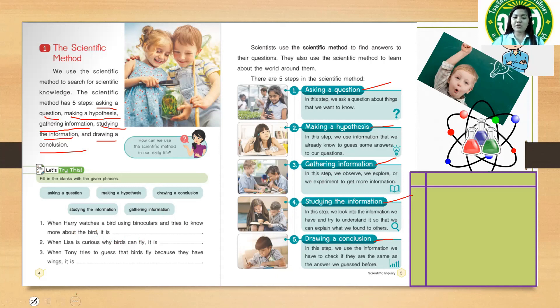All right, so it's your turn to answer number two and number three. Number two says: when Lisa is curious why birds can fly, it is blank. Number three: when Sony tries to guess that birds can fly because they have wings, it is blank.